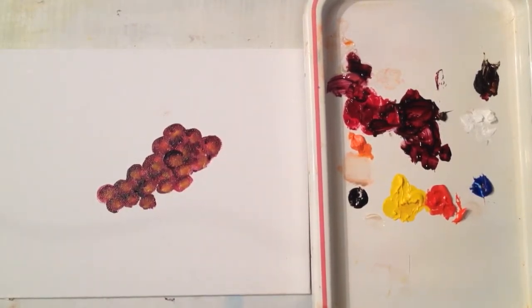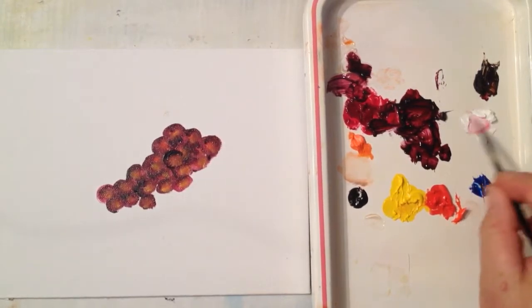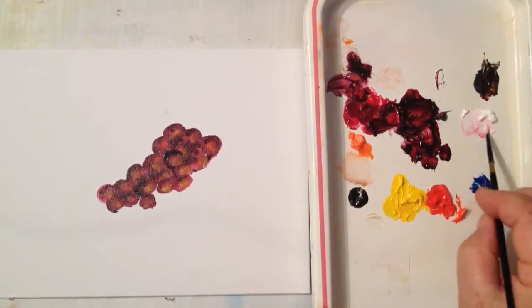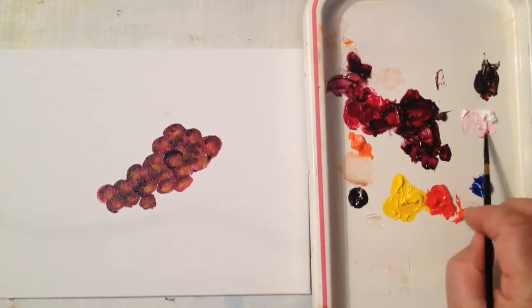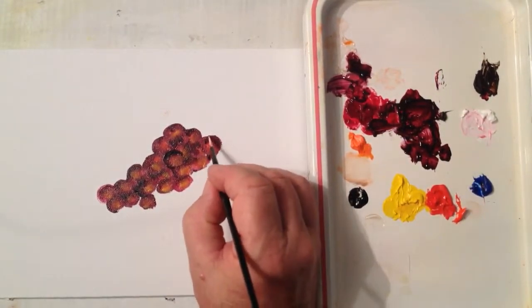Next we're going to take white with a liner brush and a little bit of red to make it on the pinkish side. And we're going to outline the grapes.